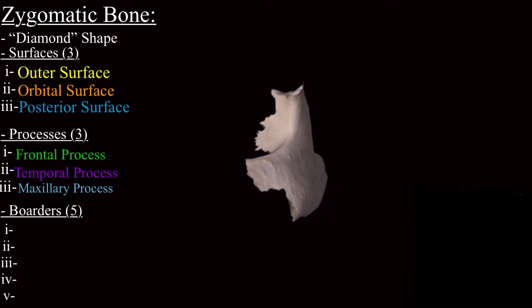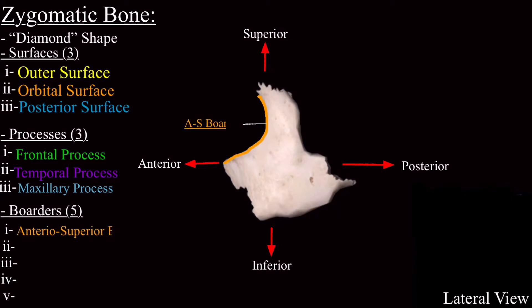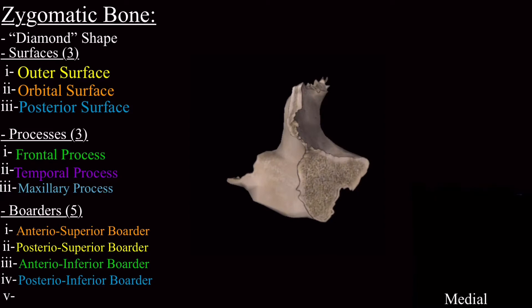The five borders of the zygomatic bone are more clear in the lateral view. From the lateral view, there is the anterior superior border, the posterior superior border, the anterior inferior border, the posterior inferior border. The fifth border, the posterior medial border, is more clear from the medial view.